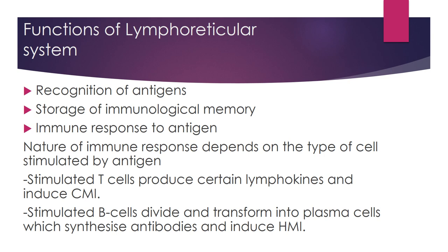There are three main functions of the lymphoreticular system: recognition of antigens, storage of immunological memory, and immune response to antigens. The nature of the immune response depends on the type of cell stimulated. Stimulated T cells produce lymphokines and induce cell-mediated immunity, whereas stimulated B cells divide and transform into plasma cells, which synthesize antibodies and induce humoral immunity.